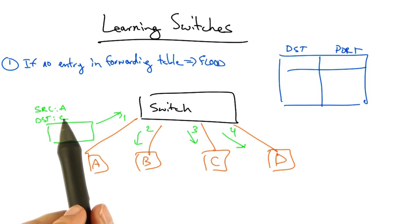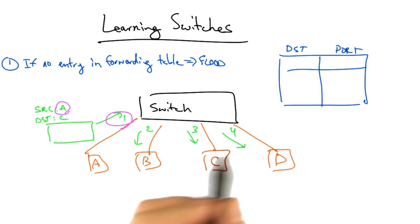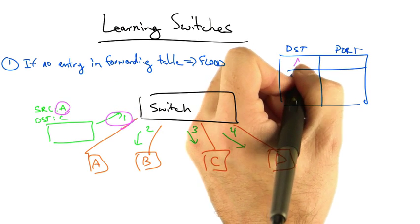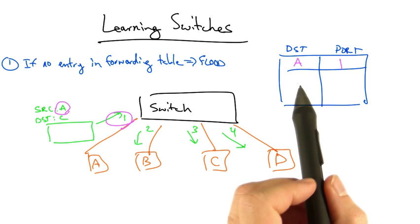On the other hand, because the frame has a source address of A and arrived on input port 1, the switch can now make an association between address A and port 1. In other words, it knows that the host with address A is attached to port 1.